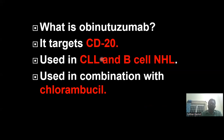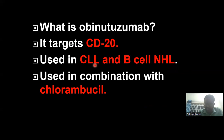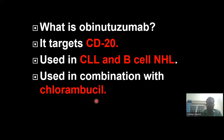Now comes obinutuzumab. It targets CD20, which is highly expressed on B-cell neoplasms. It is used in B-cell non-Hodgkin's lymphoma as well as chronic lymphocytic leukemia (CLL). Obinutuzumab is usually combined with chlorambucil, which is an alkylating agent.